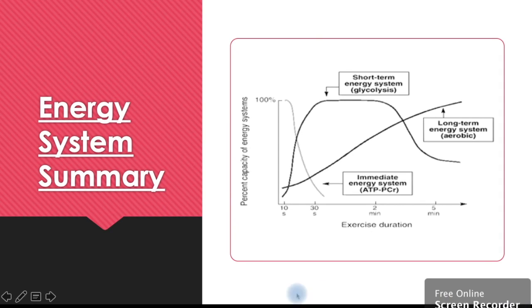To summarize how the energy systems work together, we have a little diagram here. On this axis, the one going up, that's our intensity from zero to 100% effort. On this axis, we have our time, 10 seconds upward.